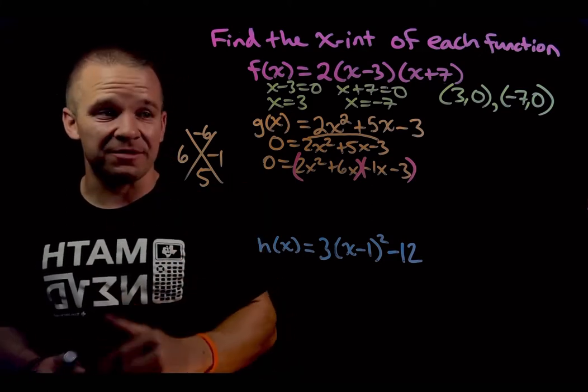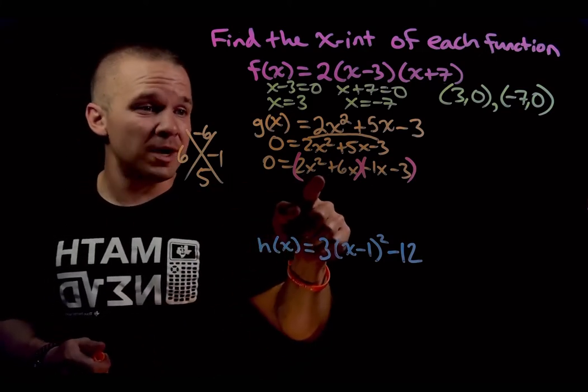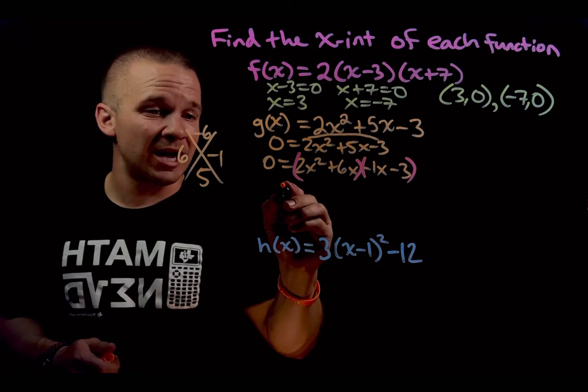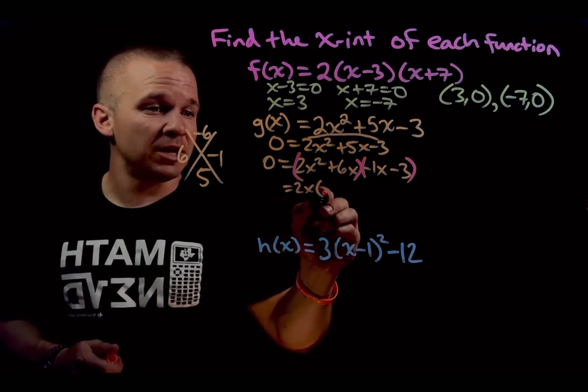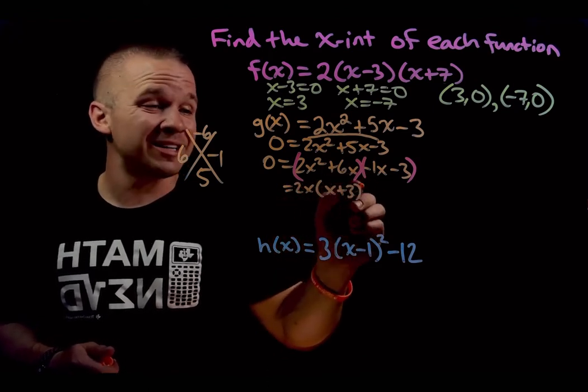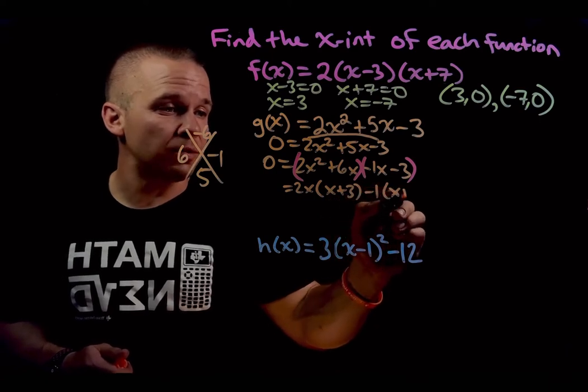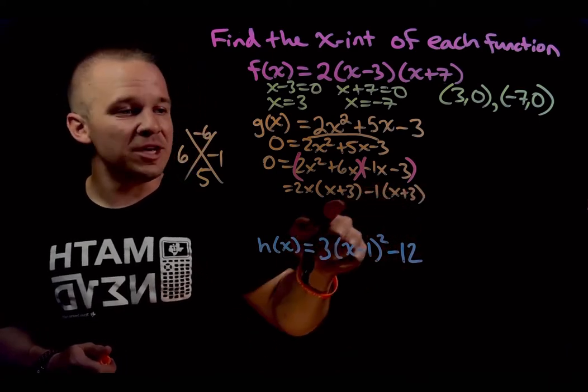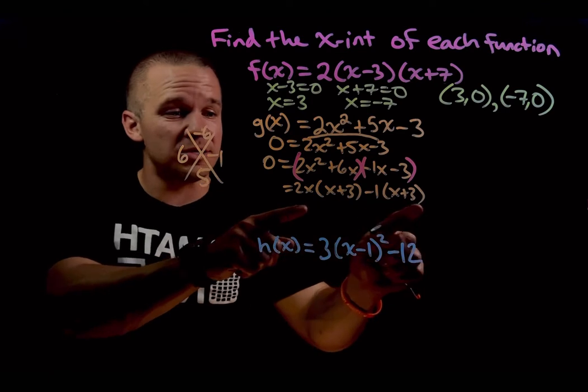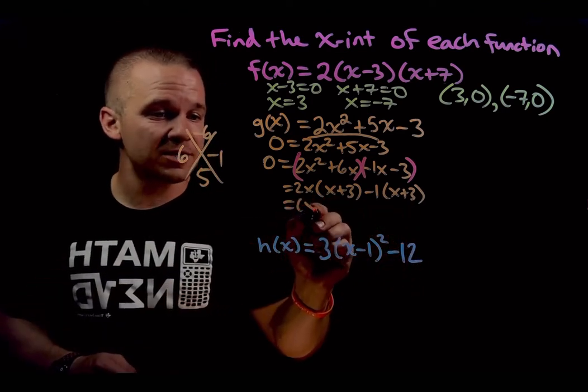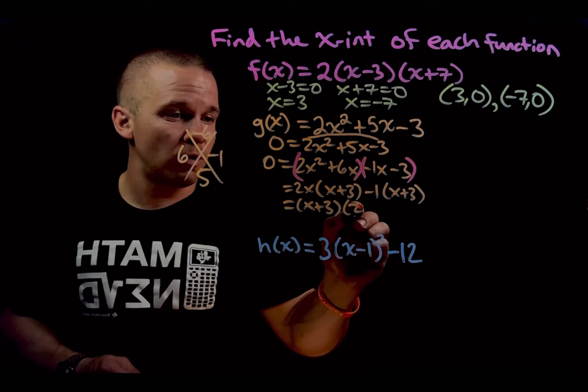And now I got to take out my GCFs, greatest common factor. Two x squared plus six x, I'm going to take out a two x and I'll be left with x plus three. Here I'm going to take out that negative one. I'll be left with x plus three. Excellent. These two are the same. That's actually a GCF from these two terms. I'm going to have x plus three and then I'll have two x minus one.